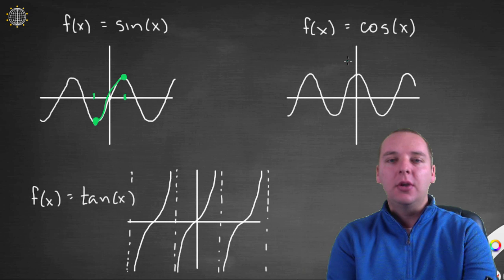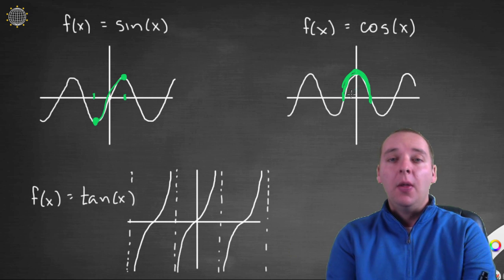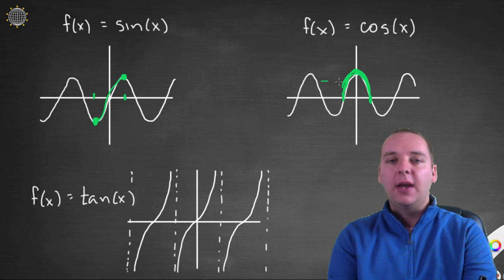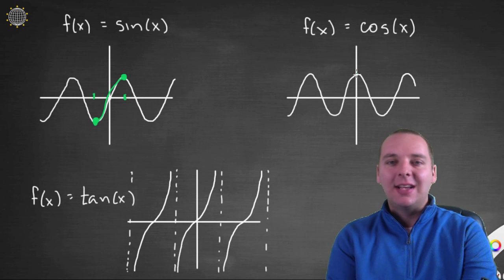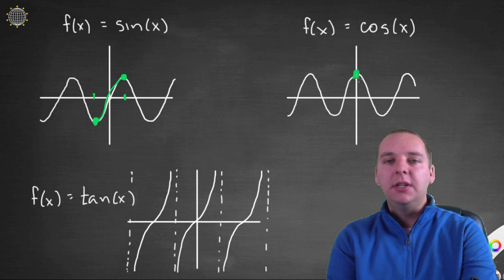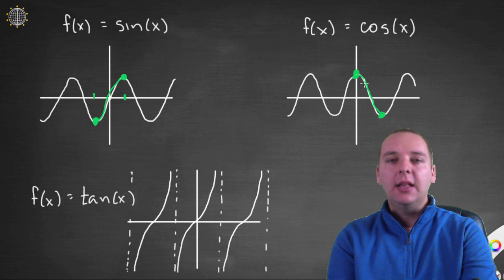If you tried the same idea with cosine, you'd actually get in trouble. If you look from -π/2 to π/2 like you did for the sine curve, it still doesn't pass the horizontal line test. So we want to use a similar idea, but -π/2 to π/2 is not the right interval for cosine. What's been decided on is to go from 0 to π instead. We shifted that restricted domain slightly, and so this portion is one-to-one and invertible — this green portion right here.